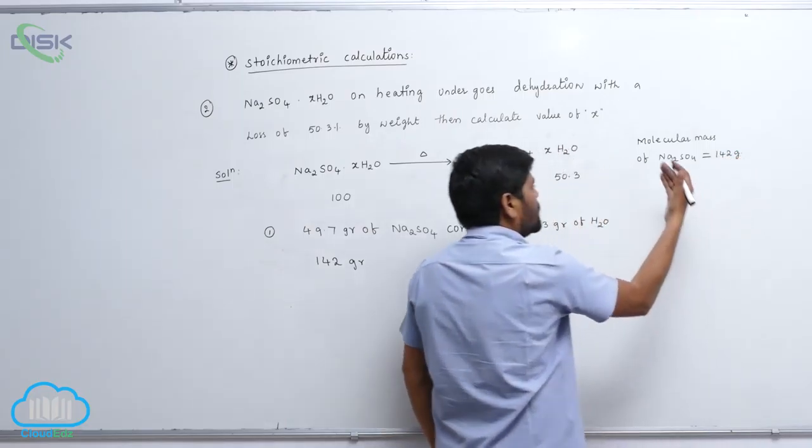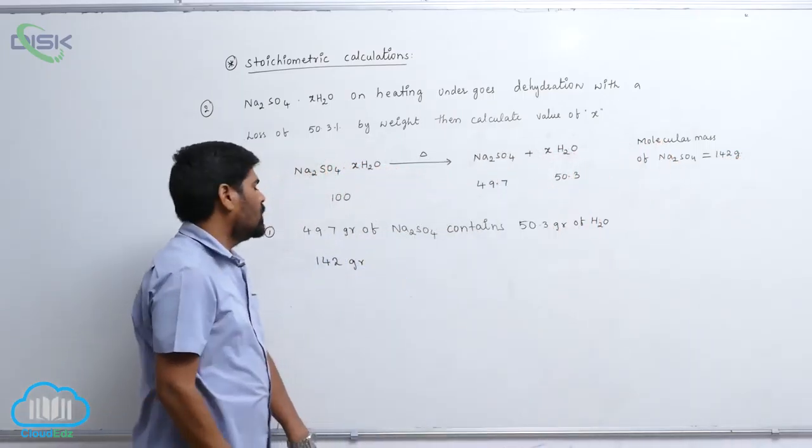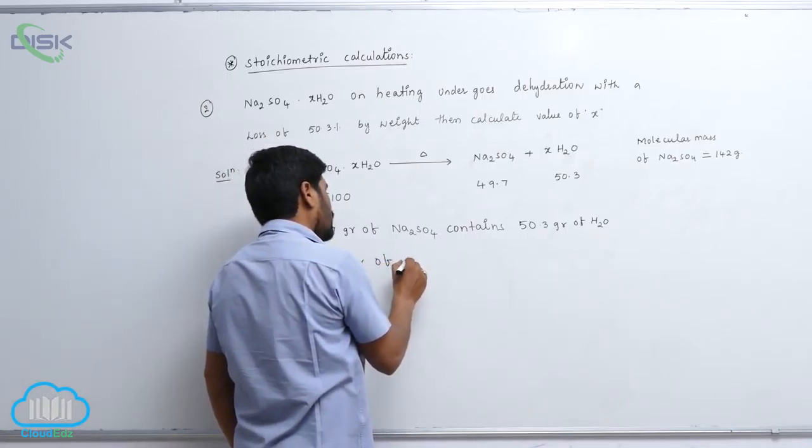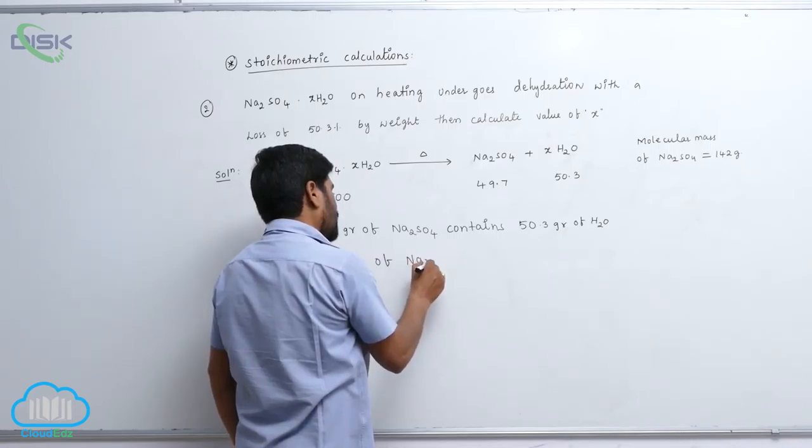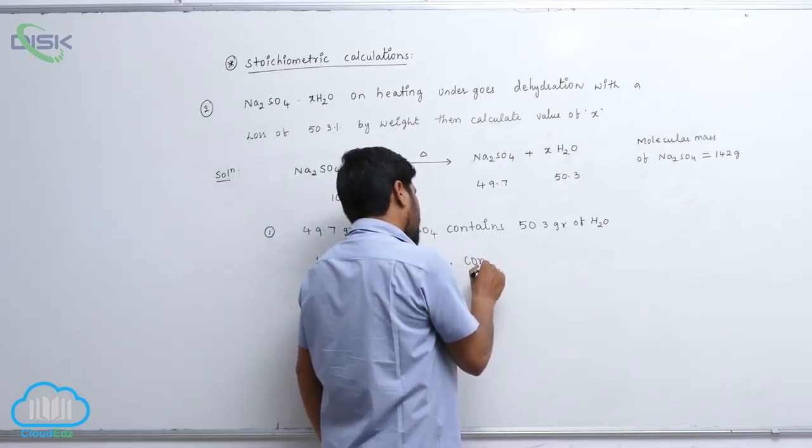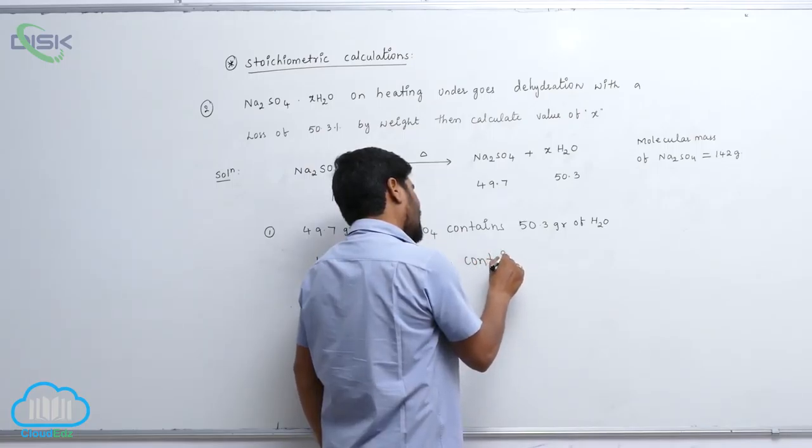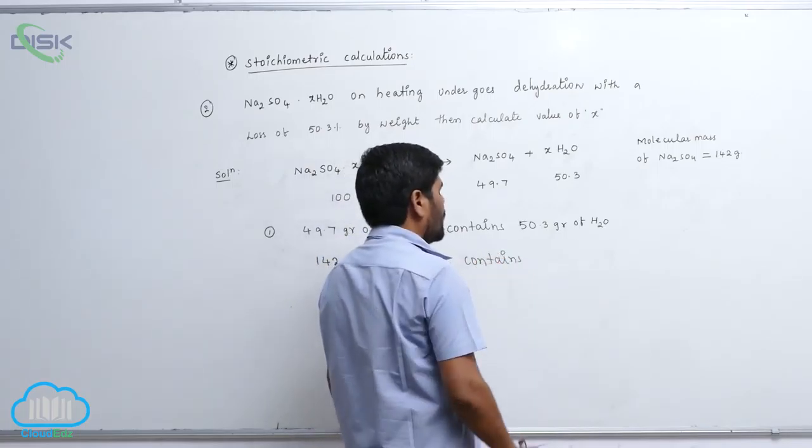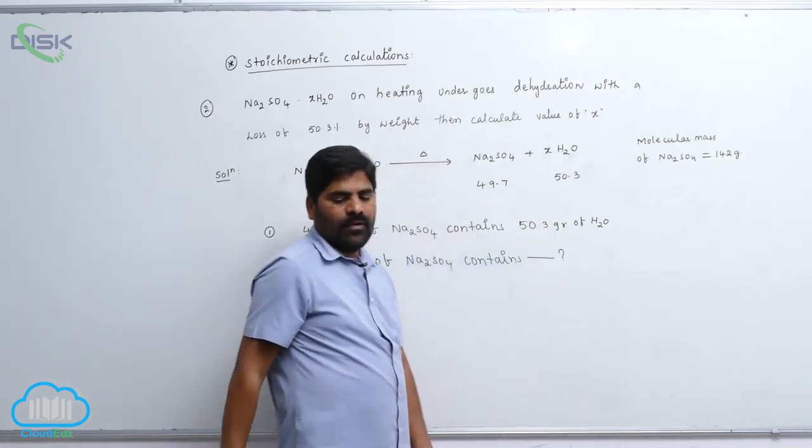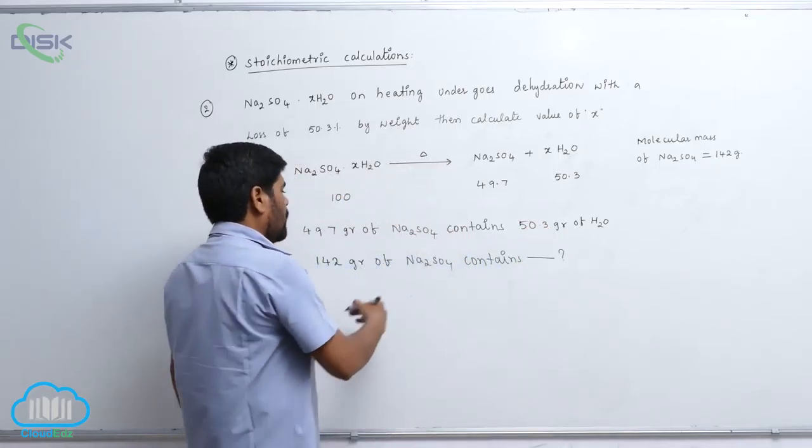When this converts into grams, 142 grams of sodium sulfate contains how many water molecules? How many water molecules.